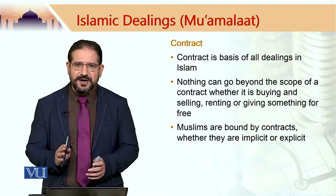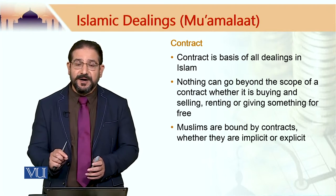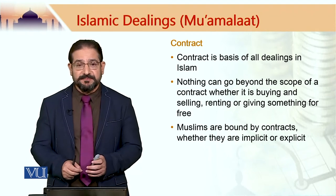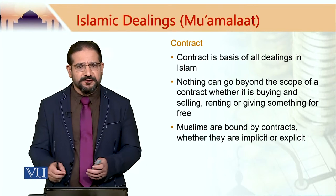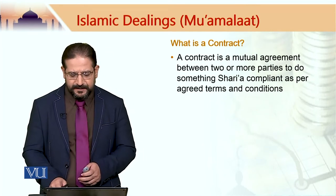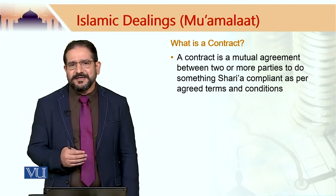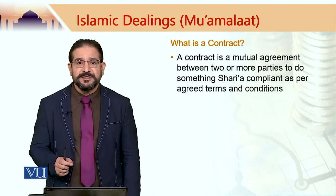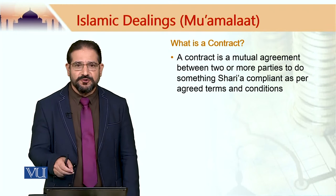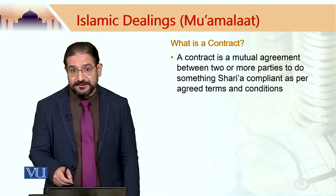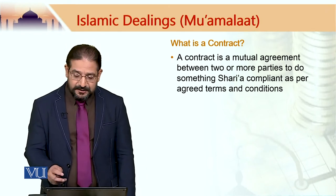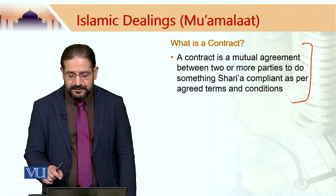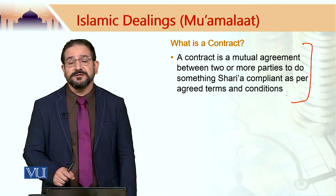Muslims are bound by contracts whether these contracts are explicit or implicit. Whatever we do, the behaviour is actually governed by something like a contract. This contract could be verbal, it could be in a written format, or it could be an implicit contract. A written contract by its very nature must be an explicit contract. A contract is a mutual agreement between two or more parties to do something Sharia compliant as per agreed terms and conditions.